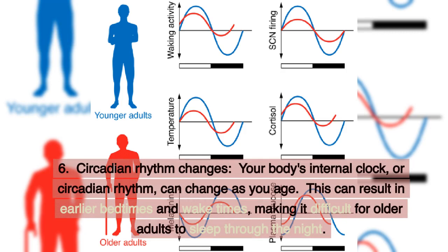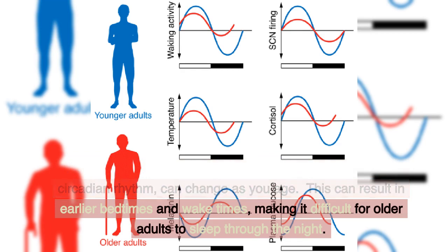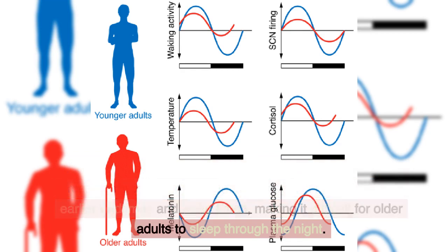6. Circadian rhythm changes. Your body's internal clock, or circadian rhythm, can change as you age. This can result in earlier bedtimes and wake times, making it difficult for older adults to sleep through the night.